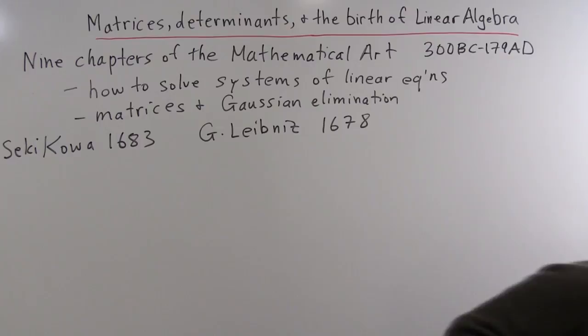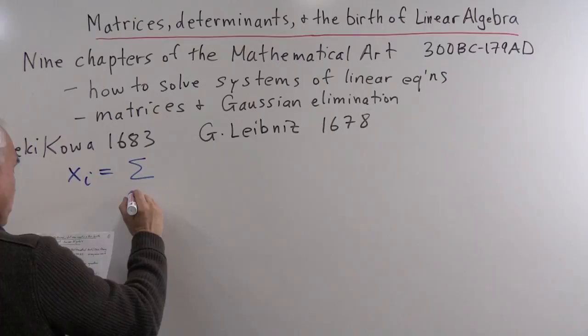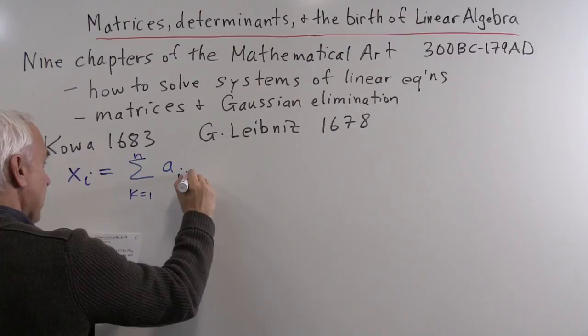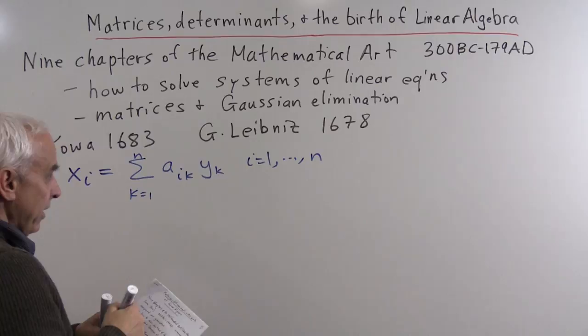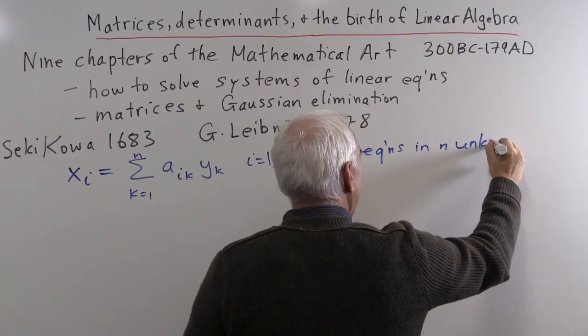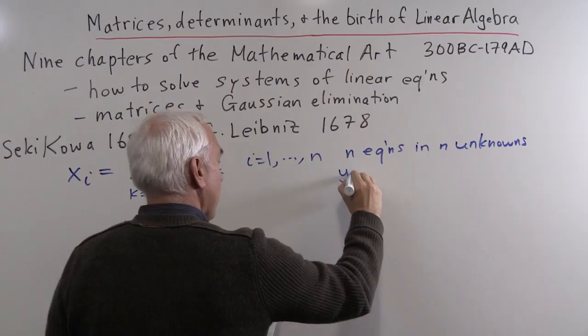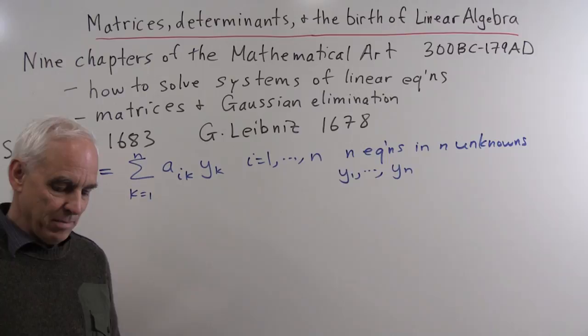There is a fundamental problem in the subject: we have a system of equations of the form Xi equals the summation from K equals 1 to N of A sub i sub K times Y sub K, where i goes from 1 to N. We therefore have N equations in N unknowns Y1 through Yn, and the idea is that we want to solve for the Yi's given the Xi's. This is the basic fundamental problem in linear algebra.